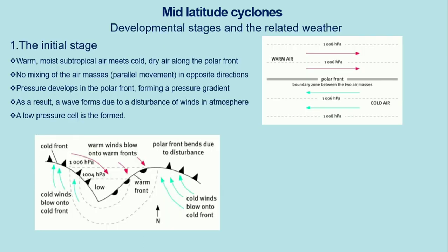We're now going to cover the different developmental stages and related weather of mid-latitude cyclones — meaning how and under what conditions these cyclones form. They occur in four different stages, and we're going to discuss each stage. The first stage is called the initial stage, and you need to be able to describe each stage for exam purposes.